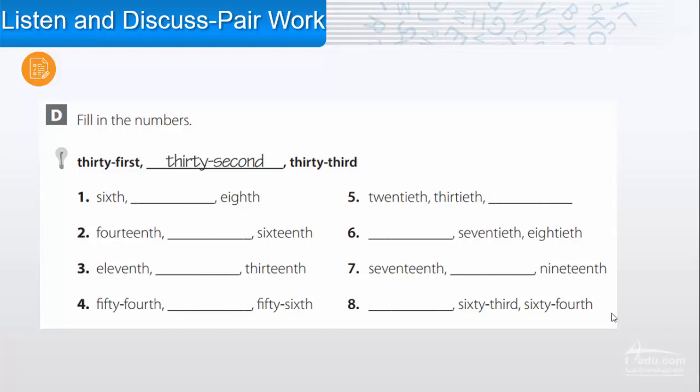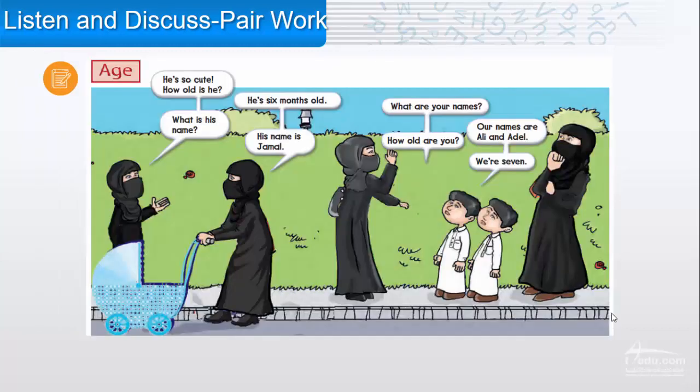For example: 31st, 32nd, 33rd. One: 6th, 7th, 8th. Two: 14th, 15th, 16th. Three: 11th, 12th, 13th. Four: 54th, 55th, 56th. Five: 20th, 30th, 40th, 60th, 70th, 80th. Seven: 17, 18, 19. Eight: 62nd, 63rd, 64th. Age, listen.